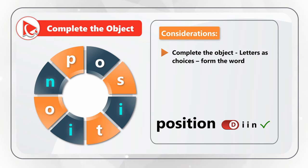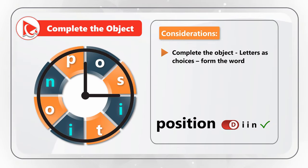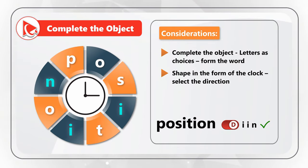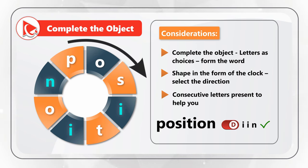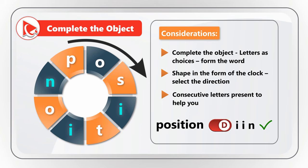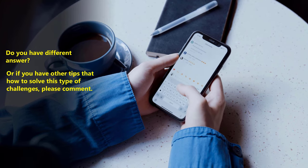Let me pinpoint three considerations that will help you solve these types of problems. When the question is to complete the object and letters are the choices, most of the time that means you need to form a word. The circle shape mimics a clock, which often means you need to select a direction - clockwise or counterclockwise. To solve these challenges, look at consecutive letters that are already present. The three consecutive letters P-O-S kick off your thinking about the word 'position.' The correct choice is D - letters I, I, N - which helps you form the word 'position.' Please post any other tips in comments.